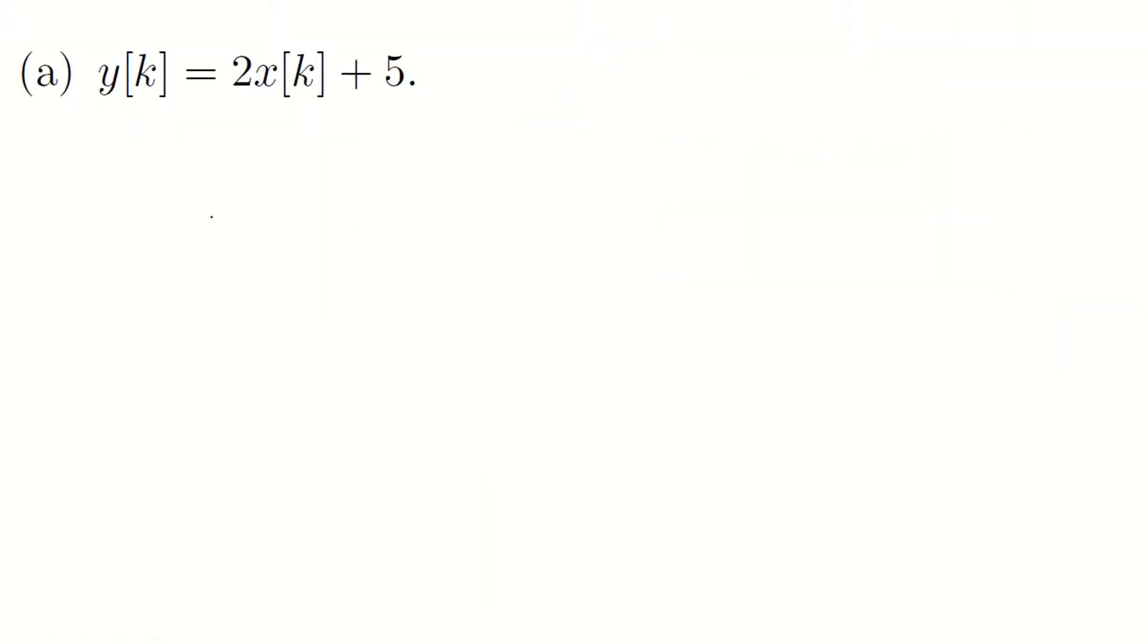So let's start with the first one here. We have a system, if we give the system xk, this system outputs yk, and yk is 2 times xk plus 5.